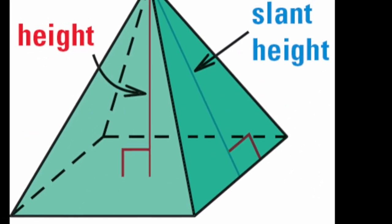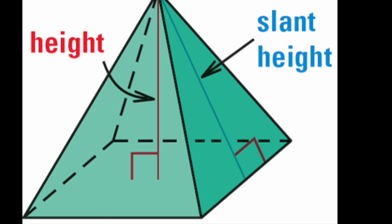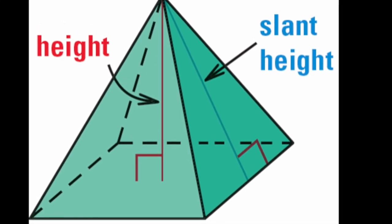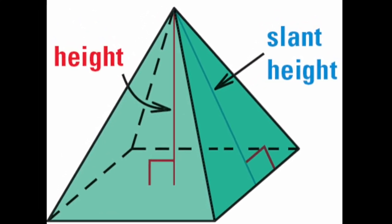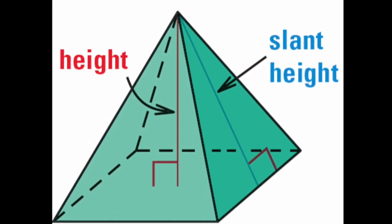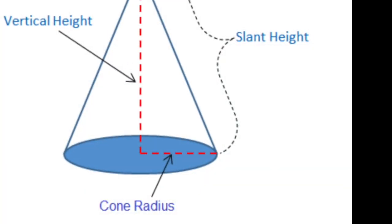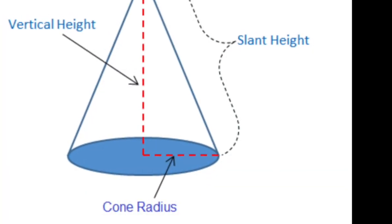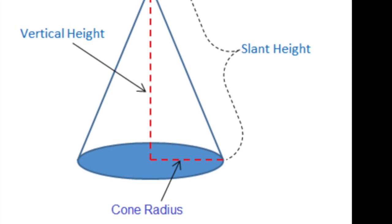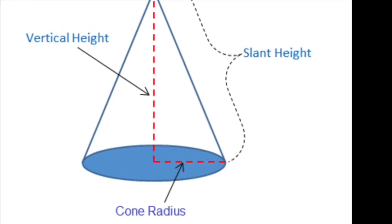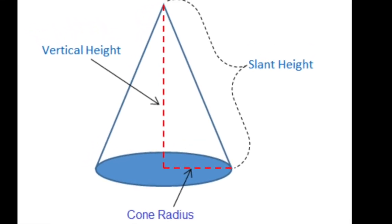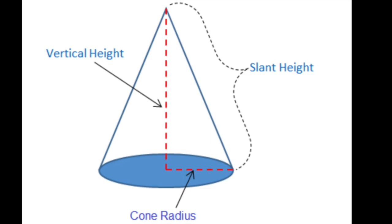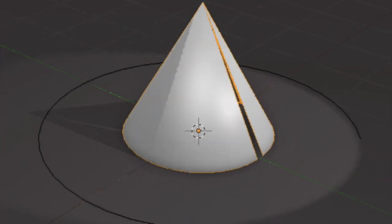One of the most important things we need to know about is the distinguishing difference between the slant height and the actual height of either a pyramid or a cone. The slant height of a cone and the slant height of a pyramid are the side that is on the side of the actual shape, not the one going from the bottom directly to the top.